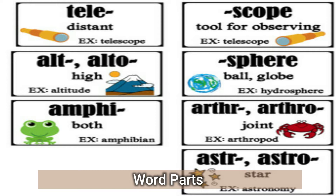Another example is photosynthesis: photo (light), syn (make), sis (process). Breaking down word parts in this way helps students decode and understand complex scientific vocabulary more effectively.